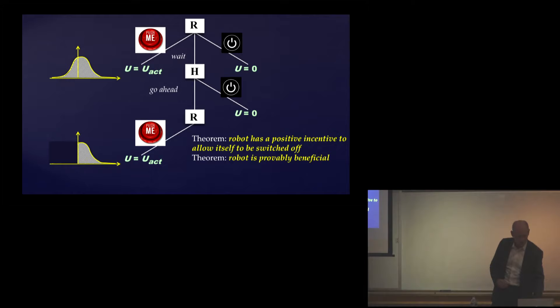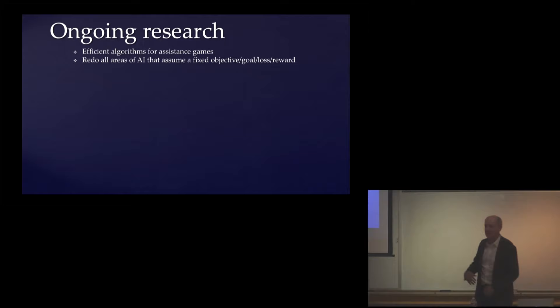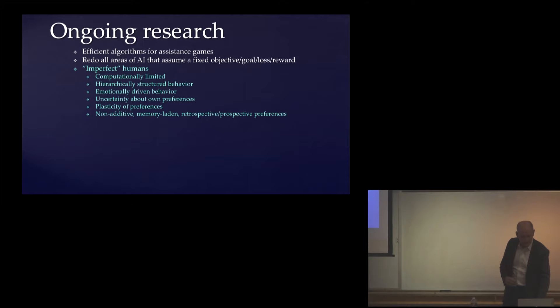That's a very simple and very general theorem. It's exactly the same theorem as the non-negative expected value of information. Because whether or not the human switches you off provides you information about what the underlying human preference is. And that information is what you need in order to be useful to the human. So the safety margin here, why the machine allows us to switch it off, is because it's uncertain about our preferences. As soon as it becomes certain about our preferences, it will no longer allow itself to be switched off. And so there's this direct relationship between uncertainty and safety, our ability to control the machines.